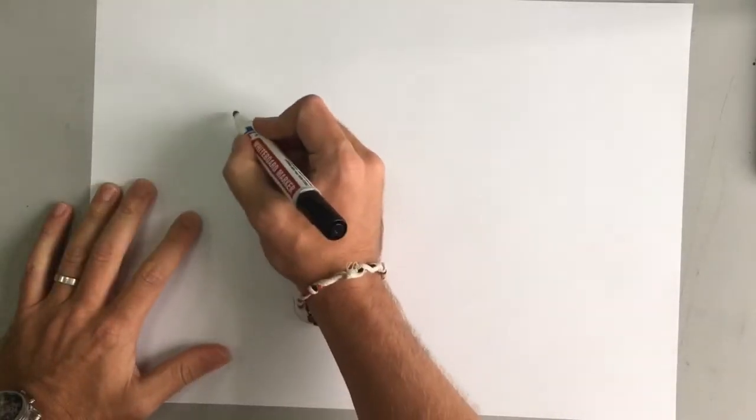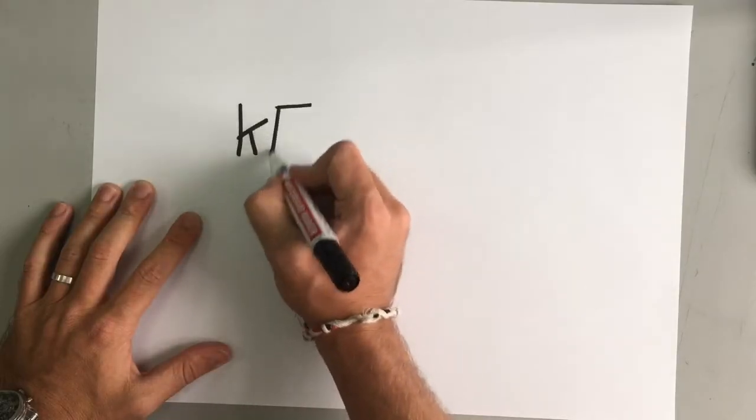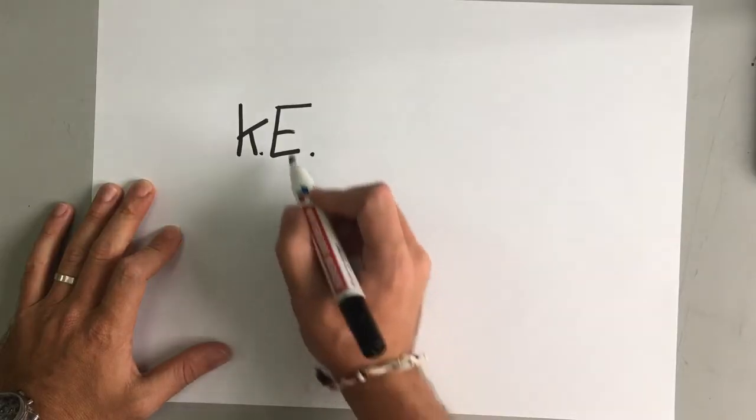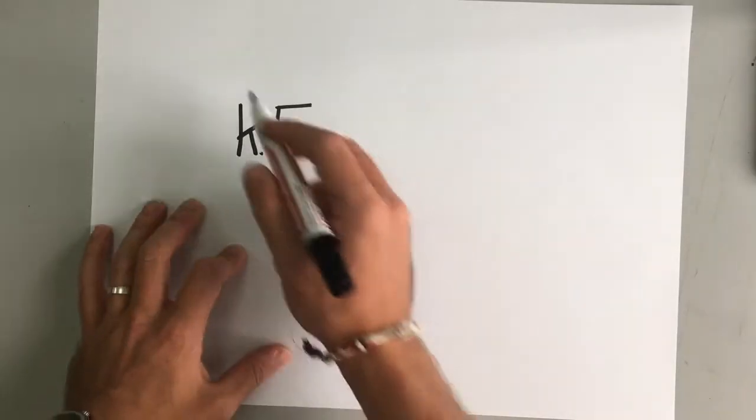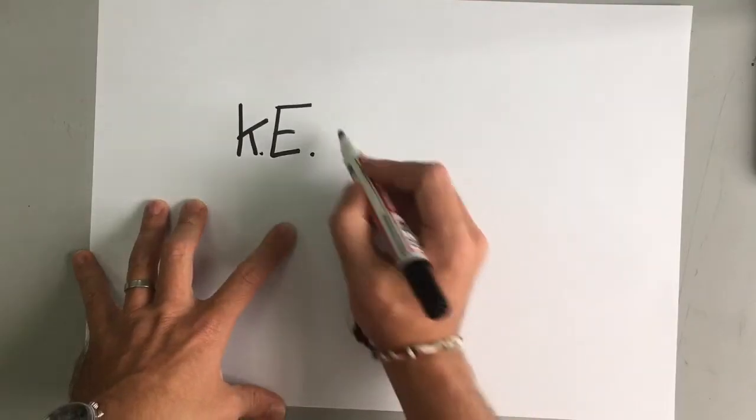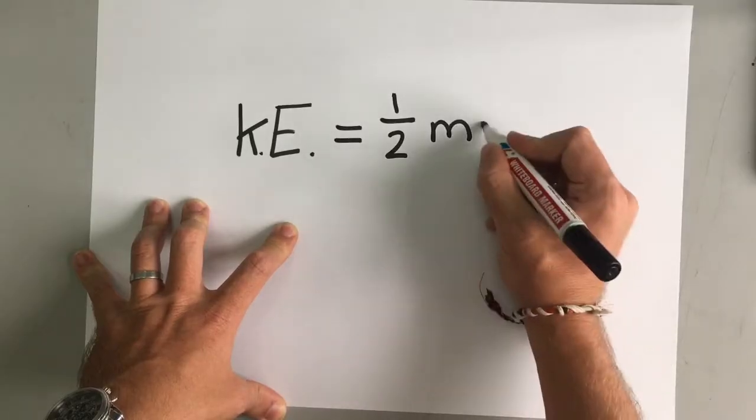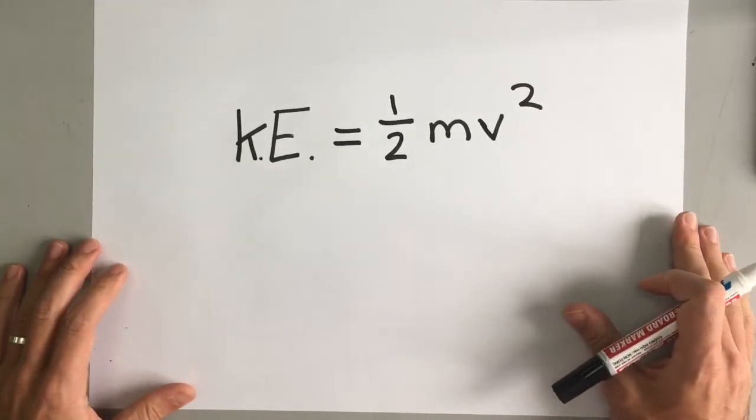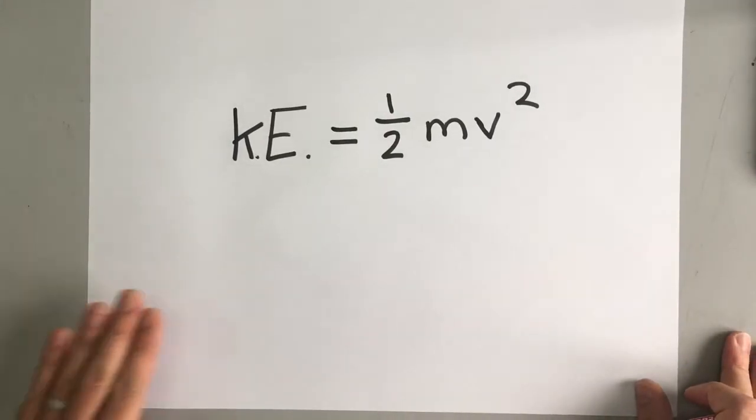We can have a formula for kinetic energy. I'm going to put KE here. Sometimes it's EK and sometimes the K is small and the E is big or the other way around. But anyway, it's kinetic energy. Kinetic energy is a half times mass times velocity squared. Remember that formula. That's a very important one. We're going to use it a lot over the course of this video.